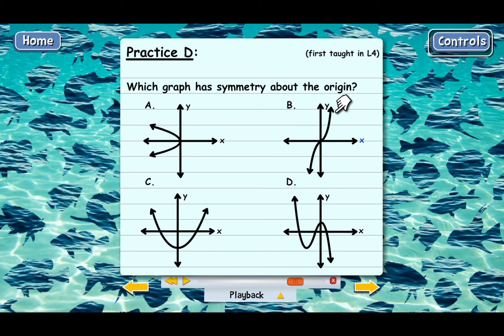Then this part here would end up down below, and this part would end up right back on top, giving us the exact same graph we started with. That means choice B is the answer to practice D.